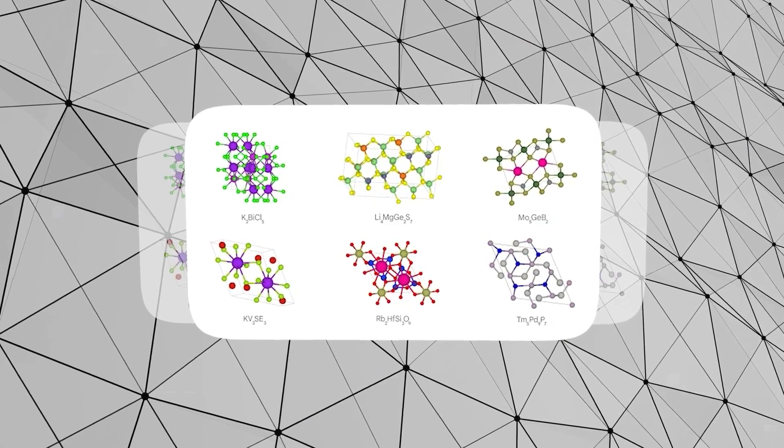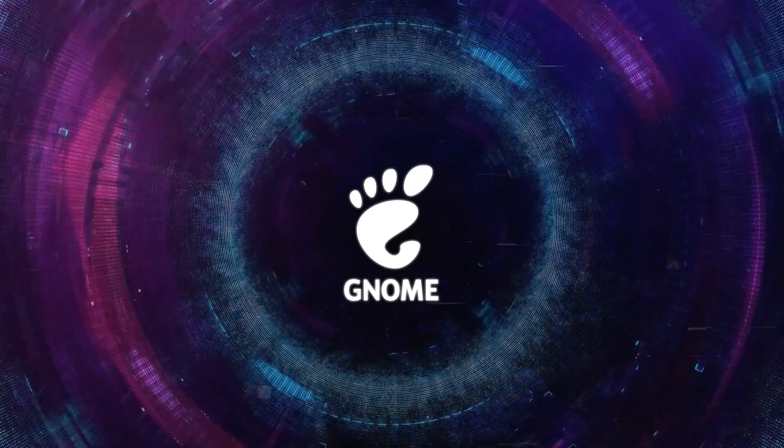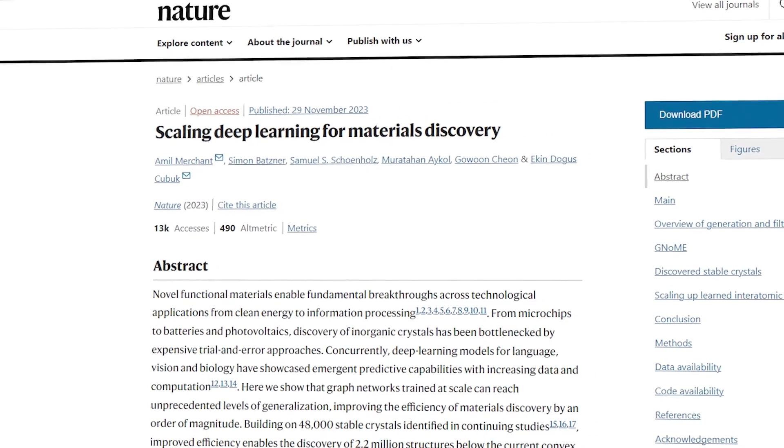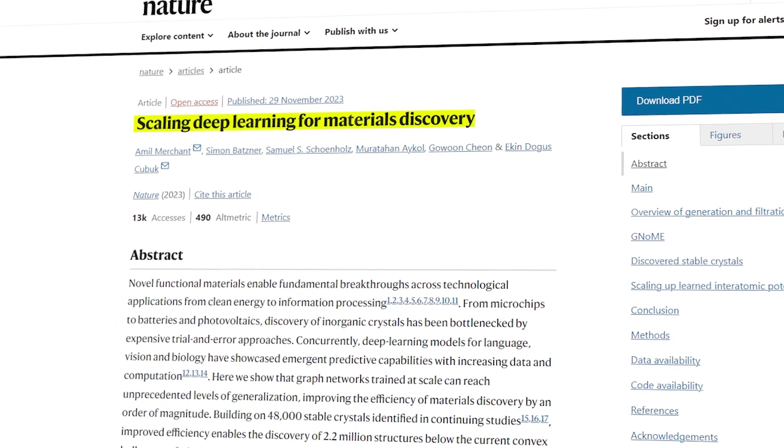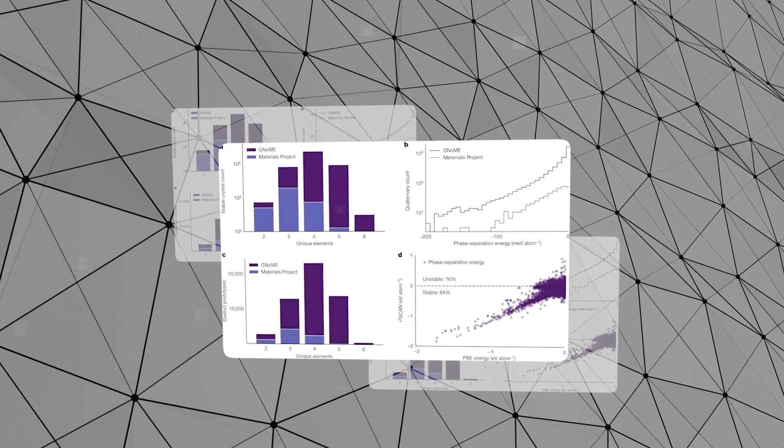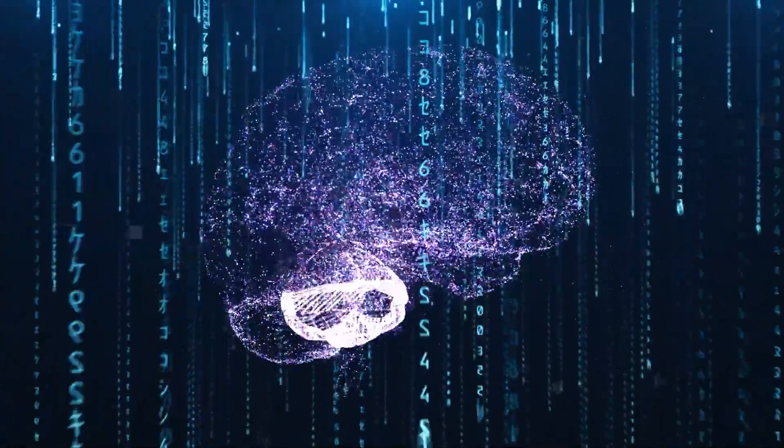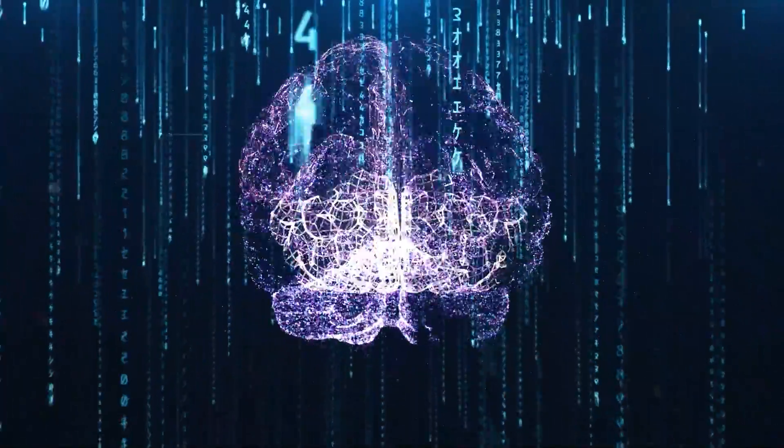So what has GNoME achieved so far? Well, in a recent paper published in Nature, Google DeepMind and their collaborators reported some amazing results. They used GNoME to predict the structures for 2.2 million new materials, which is equivalent to nearly 800 years of knowledge. And they didn't just stop there.